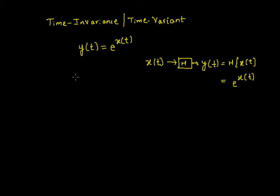So to test for time invariance, first I will consider a shift in the input x of t minus t0. So this is fed to a system of operator H to get an output y of t. Previously we had fed x of t, we got the output as exponential of x of t.